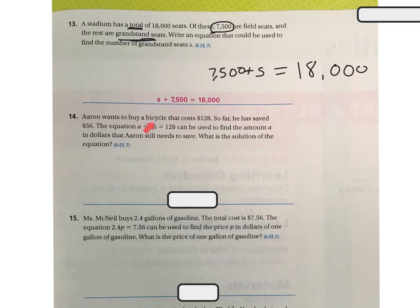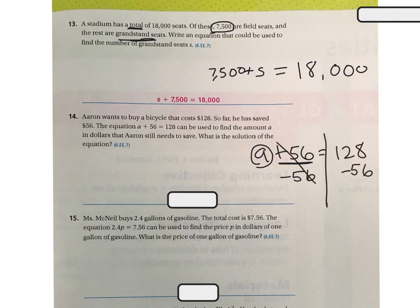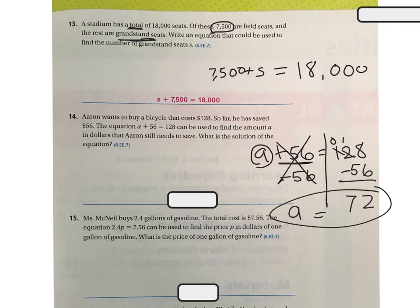Aaron wants to buy a bicycle that costs $128. So far he has saved $56. The equation A plus 56 equals 128 can be used to find the amount Aaron still needs to save. To isolate A, I subtract 56 from both sides. 8 minus 6 is 2, and I can't take 5 from 2 so I borrow — I get 7. So A equals $72.